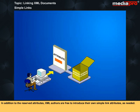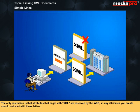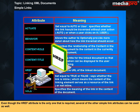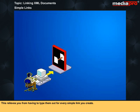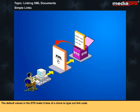In addition to the reserved attributes, XML authors are free to introduce their own simple link attributes as needed. The only restriction is that attributes that begin with 'xml' are reserved by the W3C, so any attributes you create should not start with these letters. Even though the href attribute is the only one that is required, several of the other simple link attributes can be used as well. If you anticipate setting some of these attributes equal to the same values for all your links, you can specify those values as defaults in your DTD. This relieves you from having to type them out for every simple link you create.